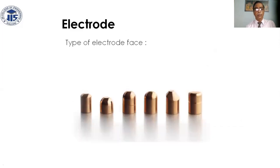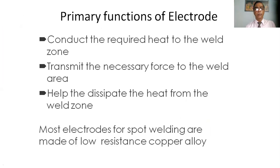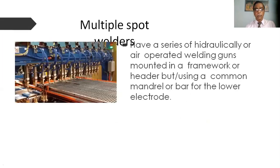There are several types of electrode face types. Primary functional electrodes conduct the required heat to the weld zone with the necessary force, and also help dissipate heat from the weld zone. Most electrodes for spot welding are made of low-resistance material. Multiple spot welders have a series of hydraulic gear-operated welding tips mounted in a framework using a common bar for the lower electrode.